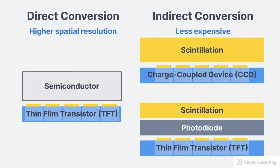In summary, there are two main types of DR systems: direct conversion and indirect conversion. Direct conversion DR systems directly convert x-ray photons into electronic signals. Indirect conversion DR systems are either CCD systems, which consist of a scintillation layer coupled with a CCD sensor chip either by lenses or fiber optics, or TFT systems, which consist of a scintillation layer, a photodiode layer, and a TFT layer. Direct conversion DR systems have higher spatial resolution than indirect conversion DR systems, but are more expensive.